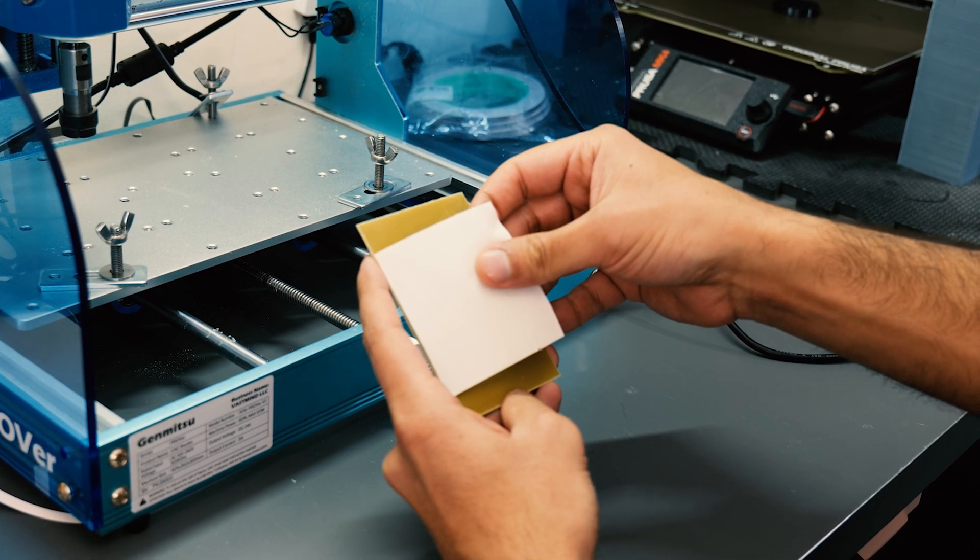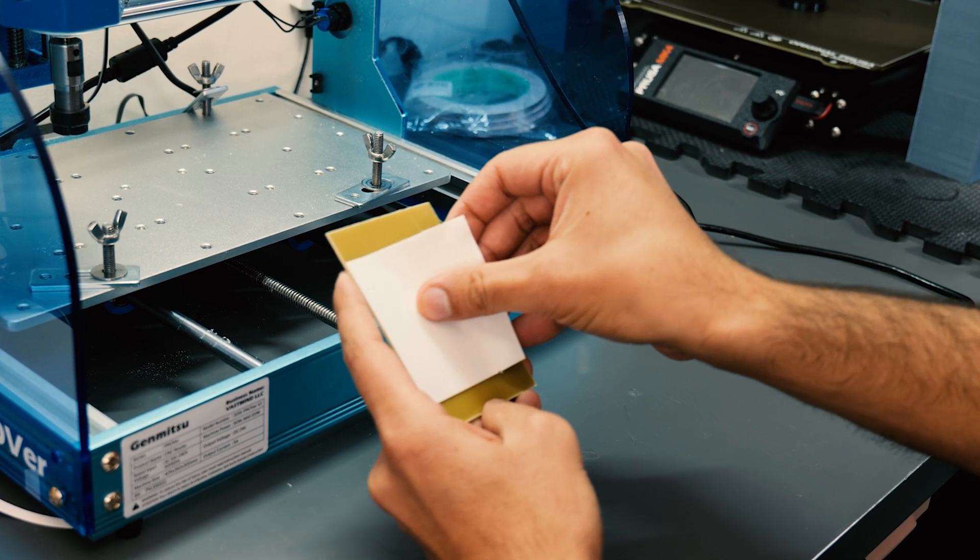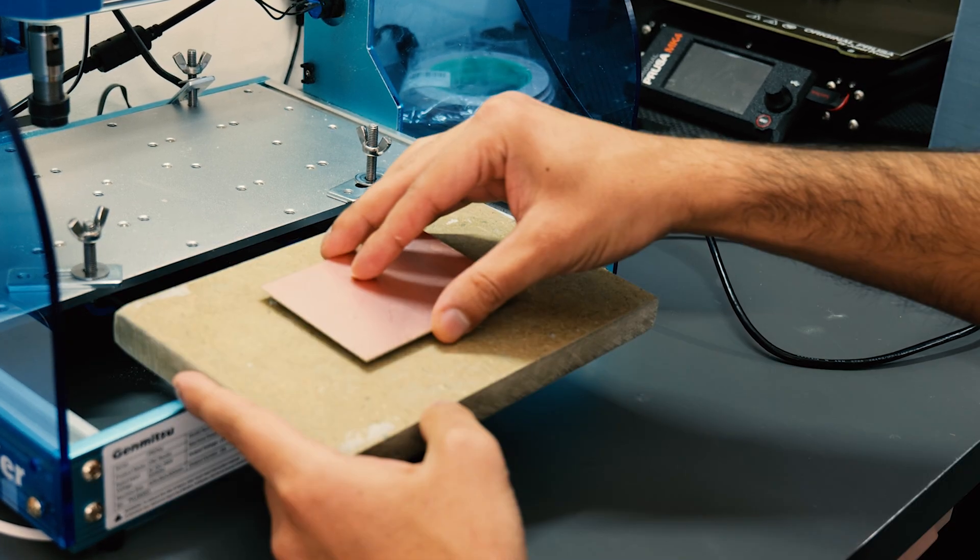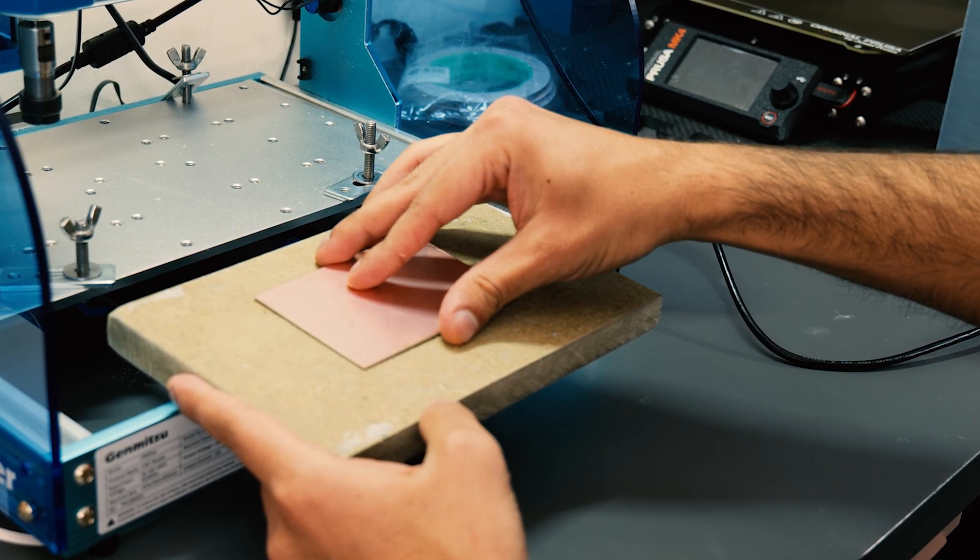Firstly you want to get your PCB really firmly attached onto the bed of the CNC. I use this double sticky tape onto some MDF and then clamp it down using the provided clamps with the CNC.